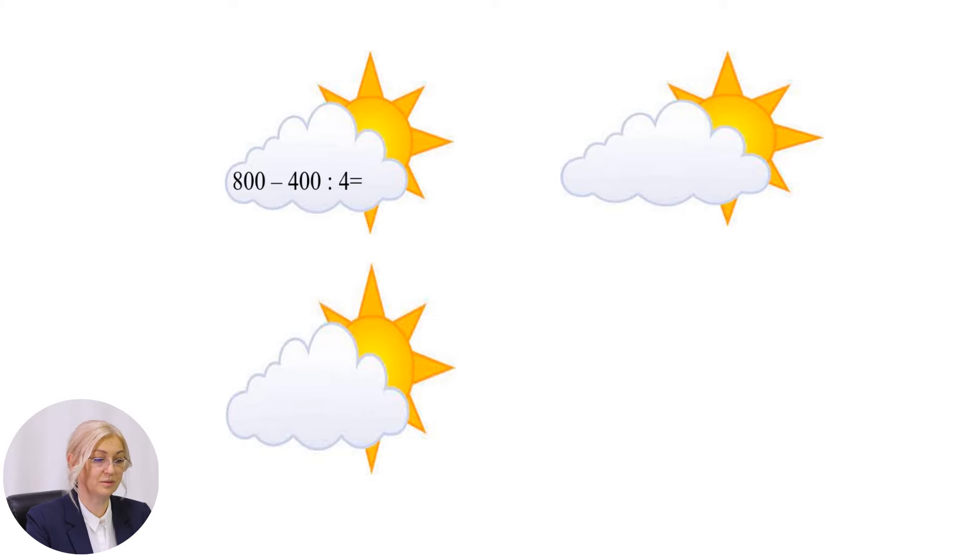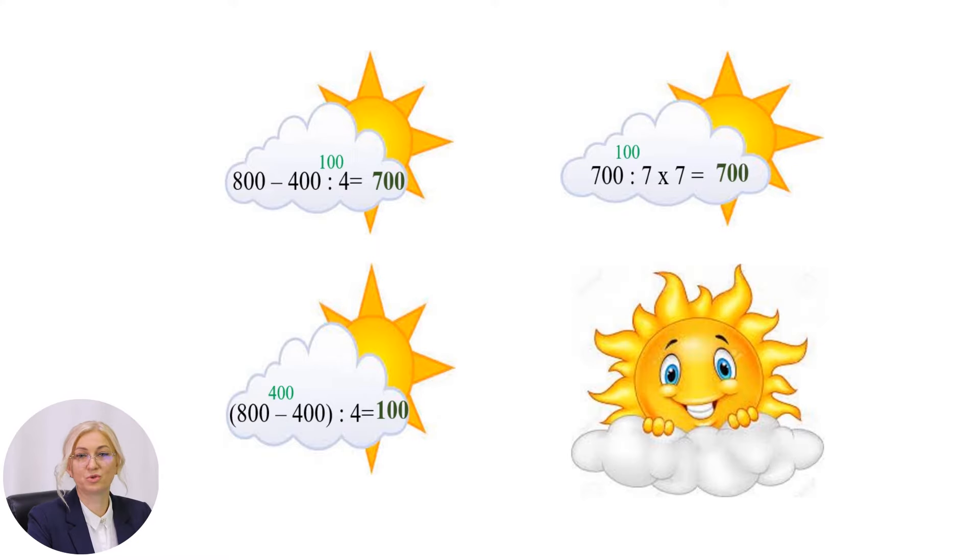800 minus 400 împărțit la 4 este egal. 800 minus 100 este egal cu 700. 800 minus 400, totul în paranteză, împărțit la 4, este egal. 800 minus 400 este egal cu 400, împărțit la 4, obținem 100. 700 împărțit la 7 este egal cu 100. Rezultatul înmulțim cu 7 și obținem 700. A apărut soarele care ne încălzește cu razele lui. Să vă fie cald și bine în suflet.